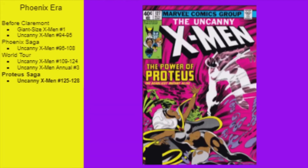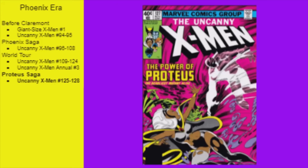The Proteus Saga then takes place in X-Men 125 to 128, which is a great arc that sees Banshee lead the team. After that is the legendary Dark Phoenix Saga from 129 to 138, which introduces Kitty Pryde and Dazzler, the Hellfire Club, and sees the death of Jean Grey.